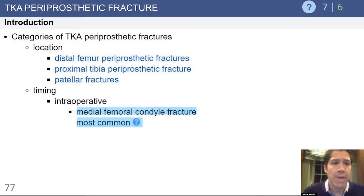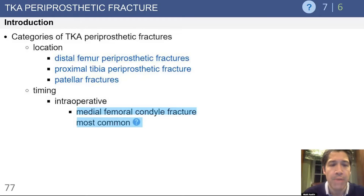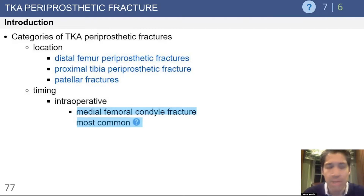The categories of total knee periprosthetic fractures are distal femur, proximal tibia, and patella fractures. In terms of timing, the most common location for an intraoperative fracture is the medial femoral condyle. This is usually seen with a PS-type prosthesis where there's a box, and the thinnest bone bridge is found medially — this stress riser is the usual location of the fracture.